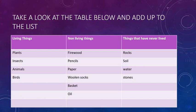Let's take a look at the table. We have living things, non-living things, and things that have never lived. Under living things we have plants, insects, animals, and birds. Non-living things include firewood, pencils, paper, woolly socks, baskets, and oil — these are things that have ever lived. Firewood was once part of a tree; pencils are made from plants; paper comes from the paper tree; woolly socks from animals; baskets from plants; and oil from plants. Things that have never lived include rocks, soil, and water.